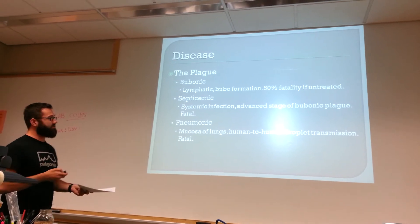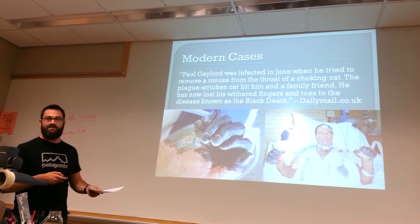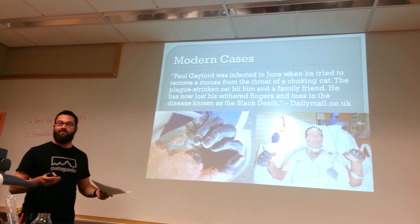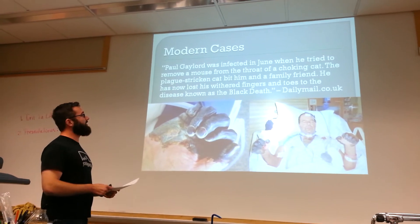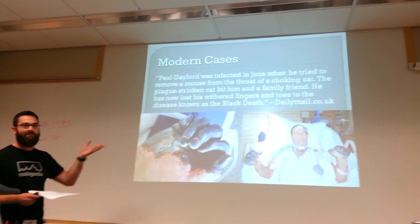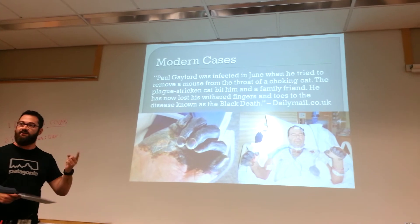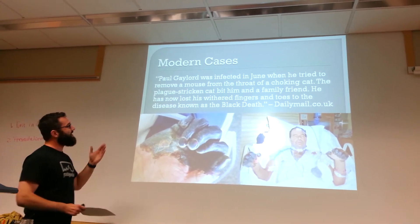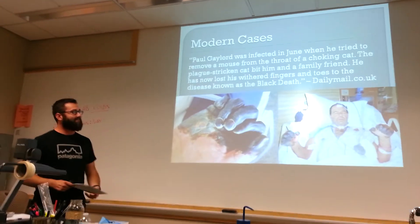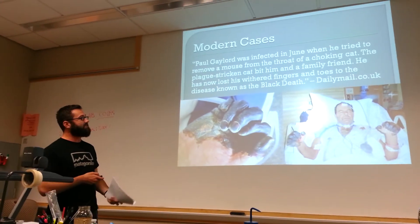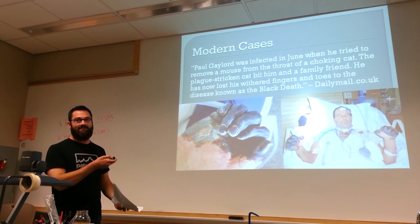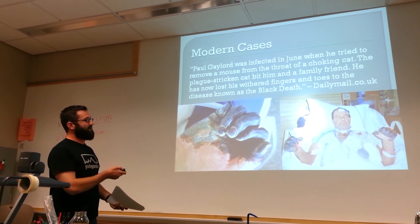So it's a horrible disease. Cats actually spread bubonic plague — they're extremely susceptible to it. Paul Gaylord was infected in June when he tried to remove a mouse from the throat of a choking cat. He should have let the cat die. Instead, he got stricken by bubonic plague in his hands and toes, and they had to be removed. This is from an article in 2012 in the Daily Mail.